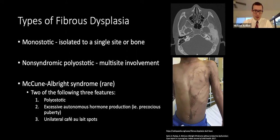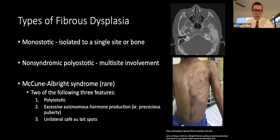McCune-Albright syndrome is the rarest form, defined by two of three features: polyostatic disease, excessive hormone production — most commonly precocious puberty — and unilateral café-au-lait spots. These spots result from overproduction of the enzyme tyrosinase, which is a rate-limiting step in melanin production, reflecting the systemic effect of cyclic AMP overproduction.